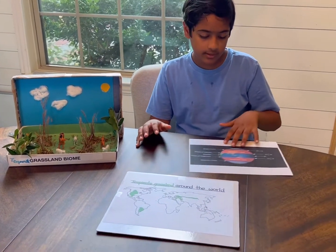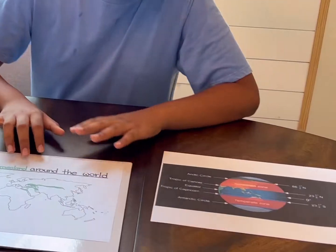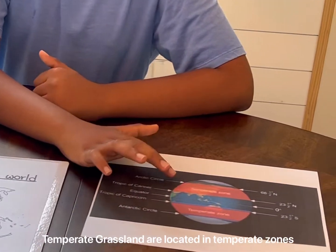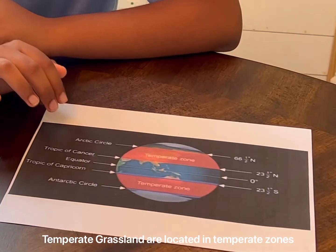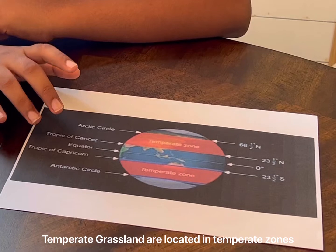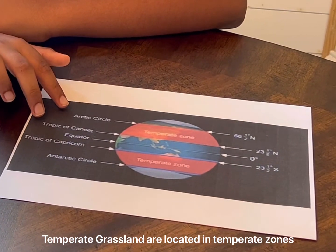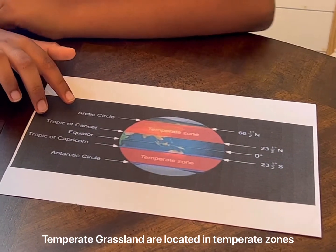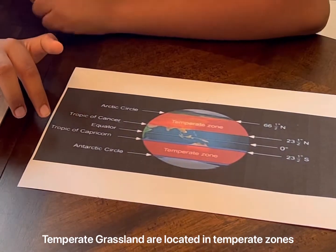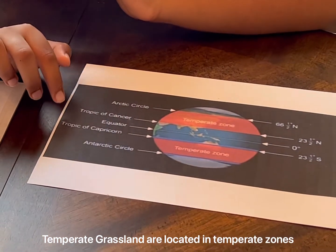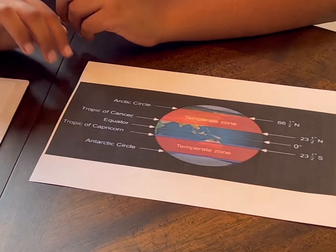The temperate grassland is located in two zones: one in the Northern Hemisphere and the other in the Southern Hemisphere. In the Northern Hemisphere it is located between the Arctic Circle and the Tropic of Cancer, and in the Southern Hemisphere it's located between the Tropic of Capricorn and the Antarctic Circle.